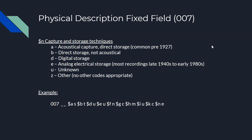Subfield N is used to code the process used to originally capture and store the recording. Not all subfields are required and can be left off if they don't pertain to the item. When put all together, the 007 will look similar to the example provided: subfield A is S for sound recording, B is sound reel tape, unknown speed and playback channels, not a disc or cylinder, seven-inch diameter, quarter-inch tape, acetate tape with ferrous oxide, captured using electrical techniques and stored as modulations on a magnetic surface.